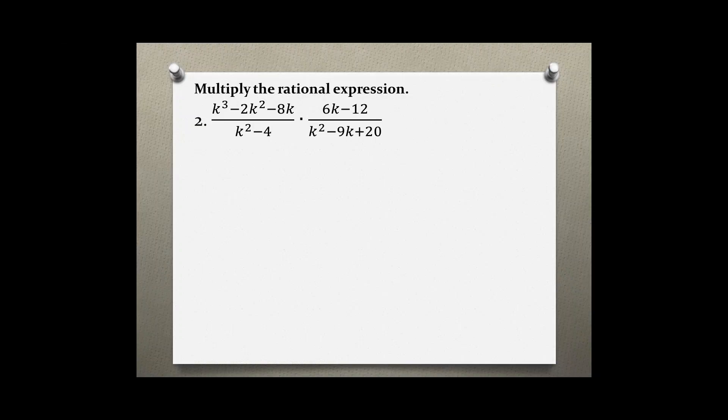To multiply these rational expressions, we have to factor each individual part. Then before we multiply, we can cross cancel and simplify this rational expression. Let's start.